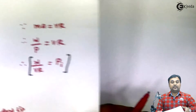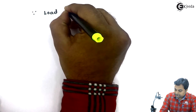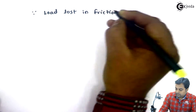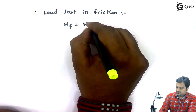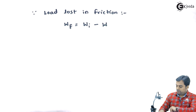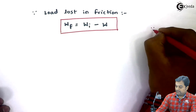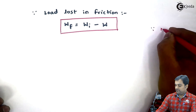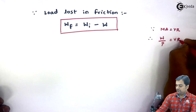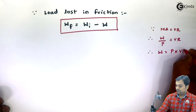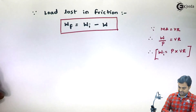The next part asks us to calculate load lost in friction. Load lost in friction W_F equals ideal load minus actual load, because the ideal load value is more. For an ideal machine, mechanical advantage equals velocity ratio, so load upon effort equals velocity ratio, giving ideal load = P × VR. This is the formula for ideal load.